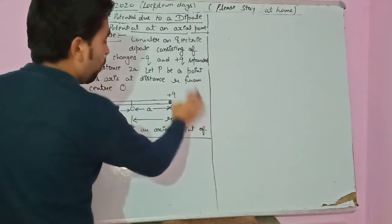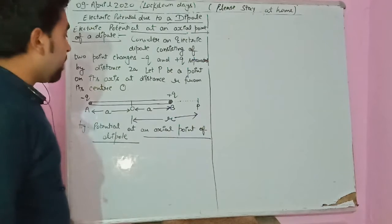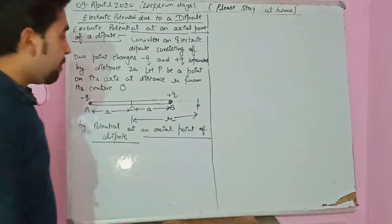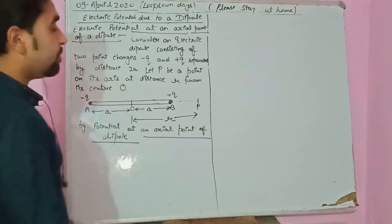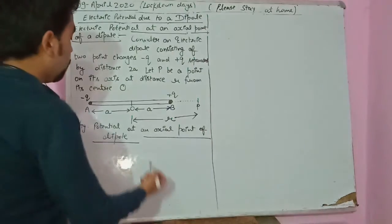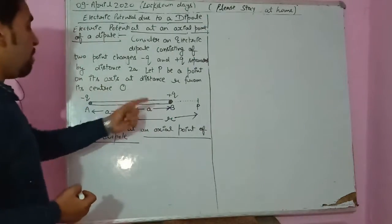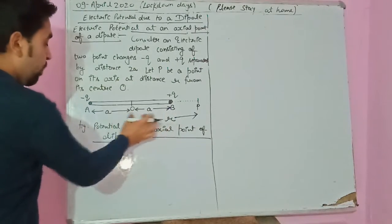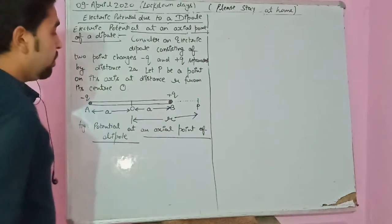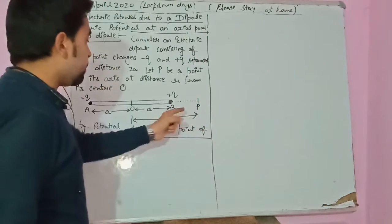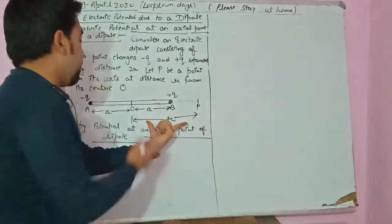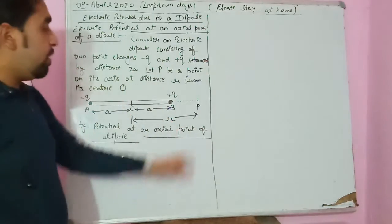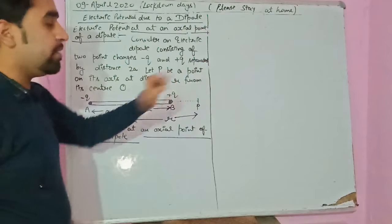We have to calculate the electric potential at point P. The center of the dipole is O. The distance from the center O to each charge is A on both sides. Point P is located at a distance R from the center, and we will calculate the electric potential at this point.